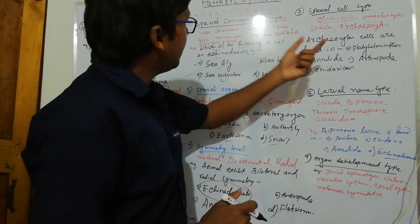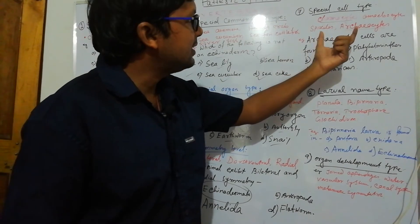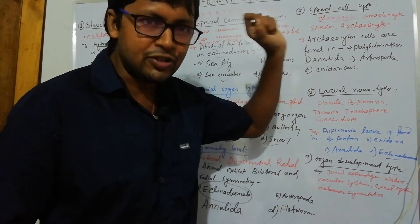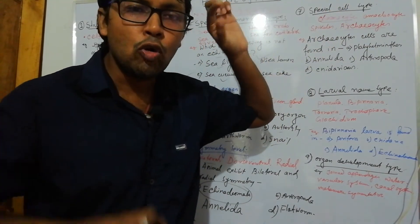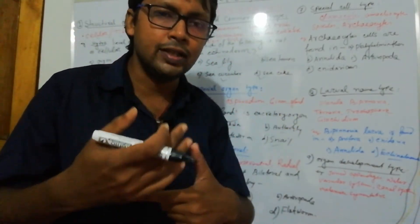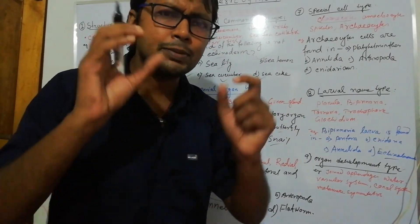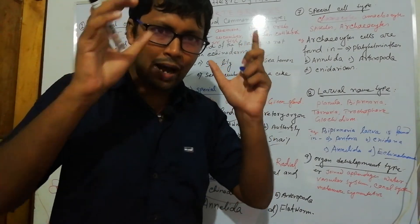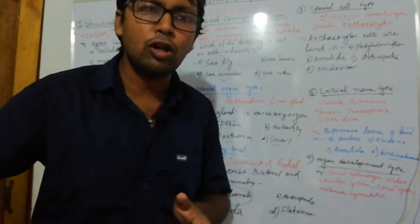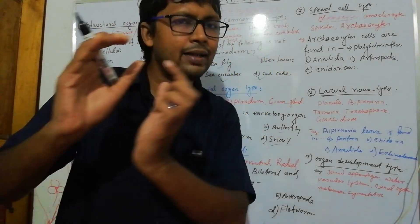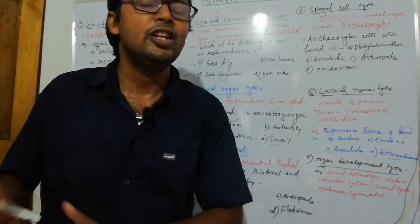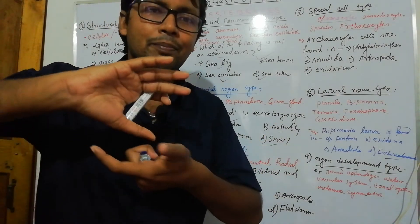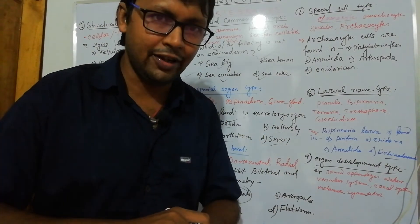The most important trait is special cell type. Examples: choanocyte cells, amoebocyte cells, spicules, archaeocytes — these are special cell types. You must remember all cellular names. Whenever you encounter a special cell type, all phyla's special cell types should come to mind together. After reading in a normal generalized way, you must then group and re-read. By grouping, you can answer any type of question. This is called pattern analysis and also called reverse reading — most important trait of a successful student.